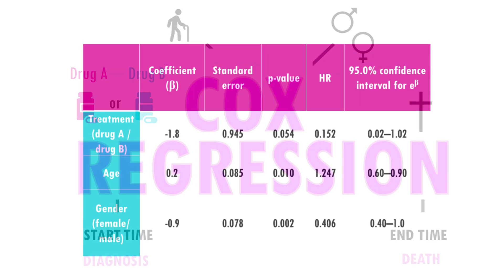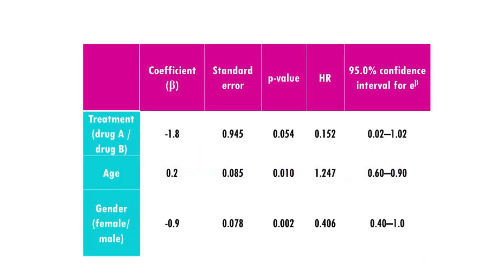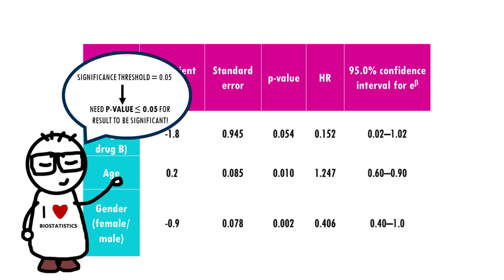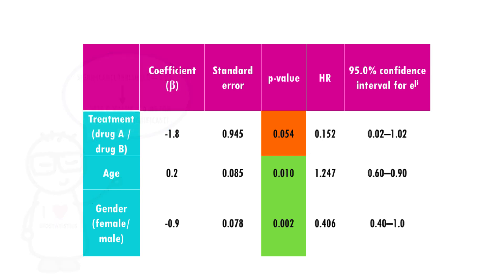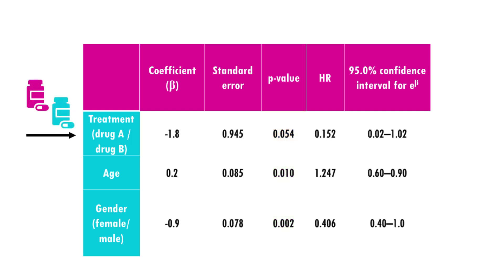These are the results. Looking at significance with a threshold of 0.05, only age and gender were significantly associated with length of survival, as they have a p-value lower than 0.05. For the treatment variable, we have a coefficient of minus 1.8 — this is the logarithm of the hazard ratio. Since it's negative, it suggests a decrease in the log hazard, indicating a lower risk of the event. However, this difference with drug B is not statistically significant based on the p-value.